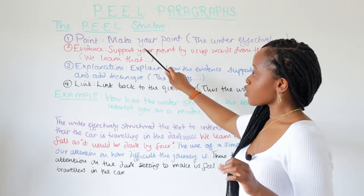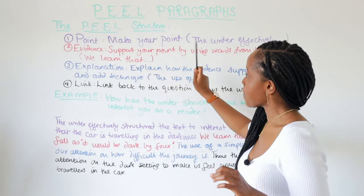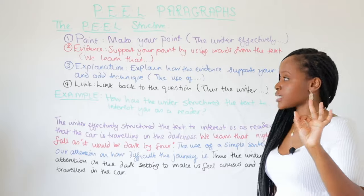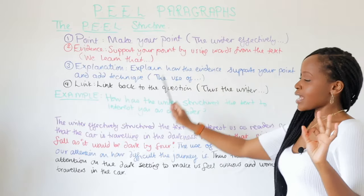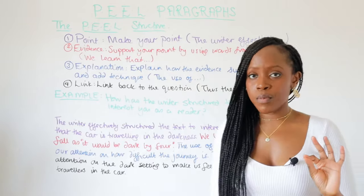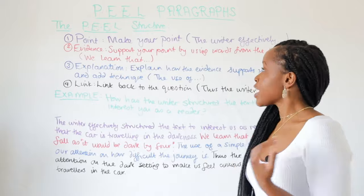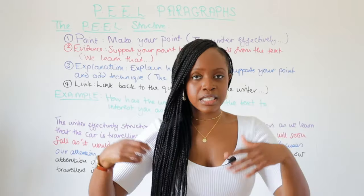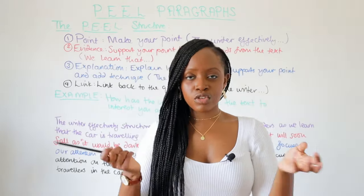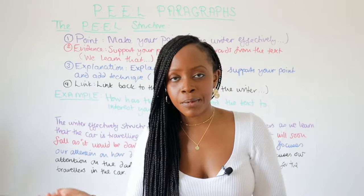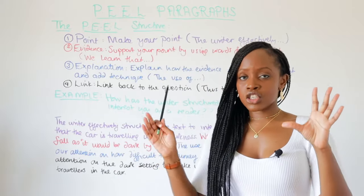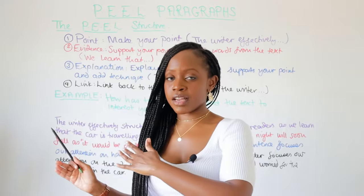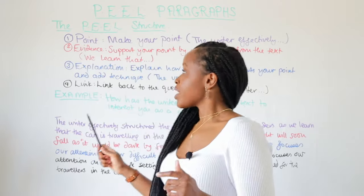Following on from that, you support your point with Evidence, using words from the text. Going back to the Point — this is the purple section — I would suggest beginning all of your points with 'The writer effectively...' So: 'The writer effectively presents...', 'The writer effectively structures the text...' — begin with 'the writer effectively' and then add the remaining part of your point.